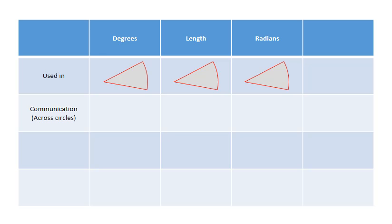Let's summarize what we know about radians so far. Degrees are used to measure the opening of the angle and the information they contain is consistent for all circles of all sizes.